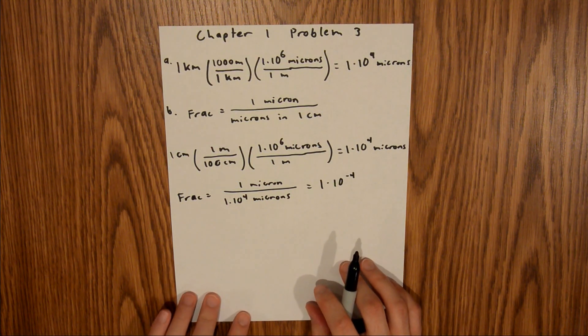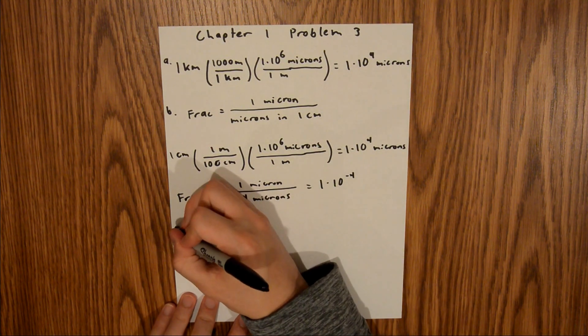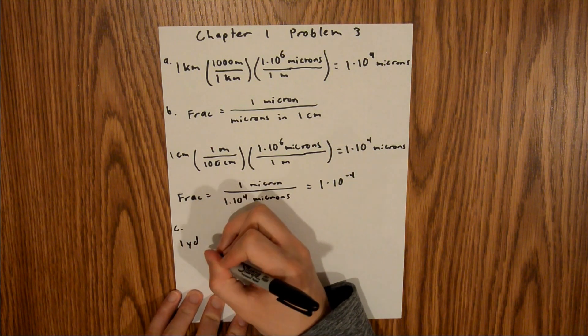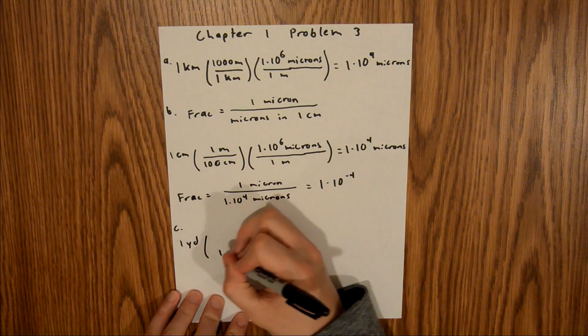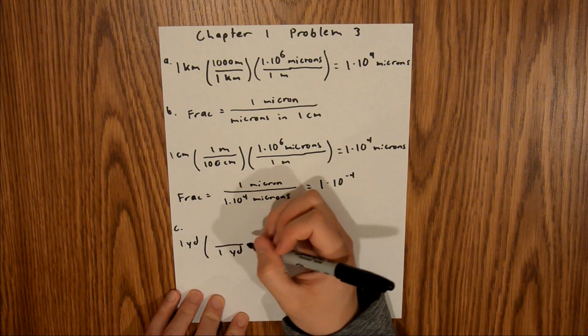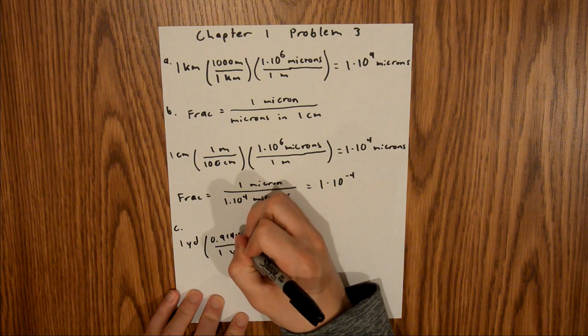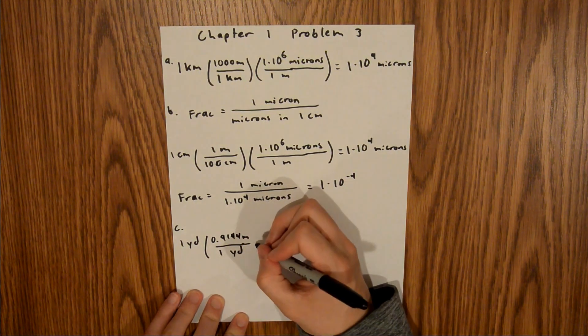And now finally for Part C, we are asked to find how many microns are in 1 yard. So what we can do is start with 1 yard, and there is 0.9144 meters in 1 yard.